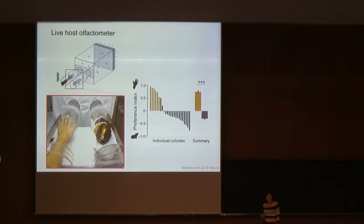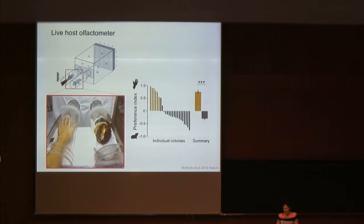The first time I ran this assay was an extremely exciting day — I tested 100 female mosquitoes and 99 of them chose the human and one chose the guinea pig. Over and over again, mosquitoes from non-African populations and from these domestic populations in East Africa show overwhelming and very robust preferences for human odor over any other animal tested, including chickens, mice, cows, and horses.